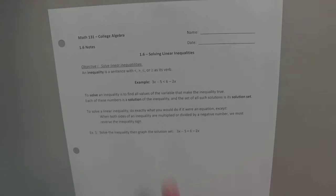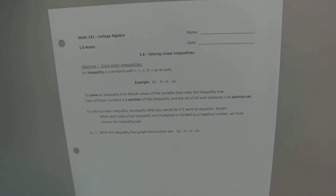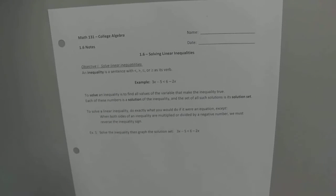For example, we might have 3x minus 5 is less than 6 minus 2x. To solve it, what's a little bit different is we're going to solve for the variable x. But for an equation, since it has to equal the right side, it's always just one answer or two answers, depending on if you have a linear or a quadratic. But here, when we solve inequalities, there's lots of numbers we can plug in for x to make the left side less than the right side. So when we find our answer, they're going to be intervals, like negative infinity to 4, or 4 to infinity. So we'll have a solution set versus just a single or a couple solutions.